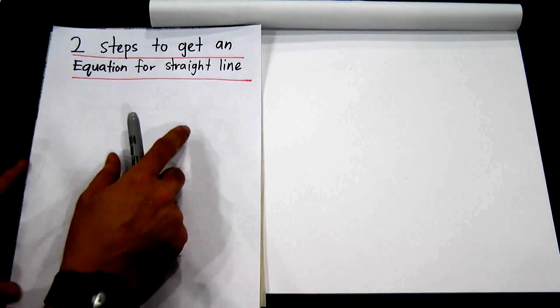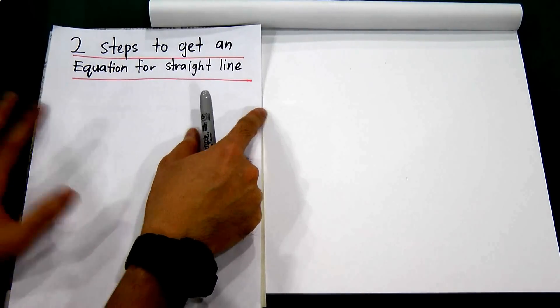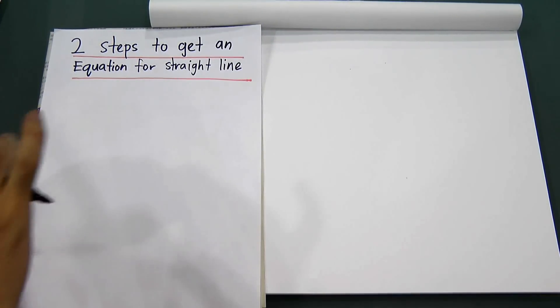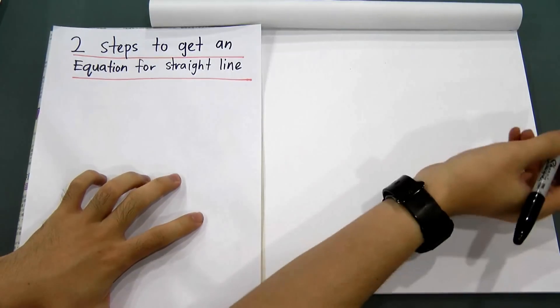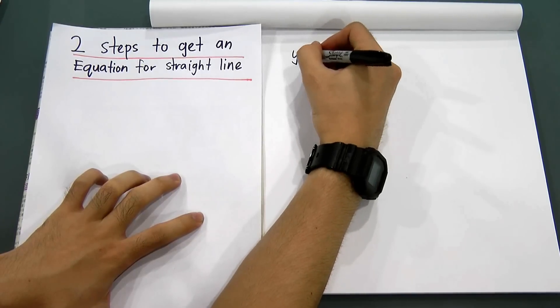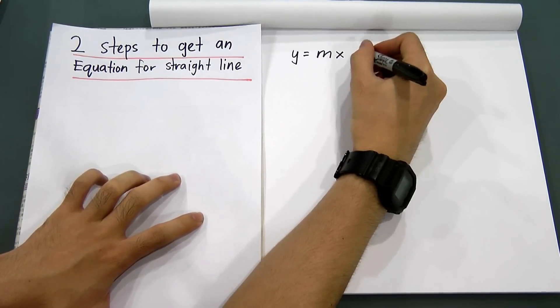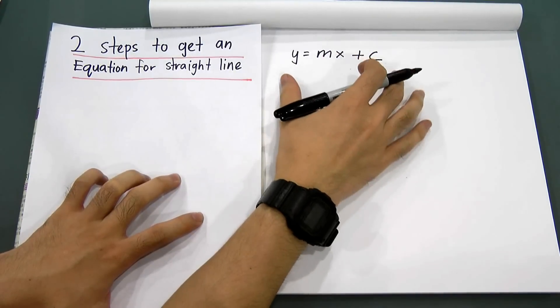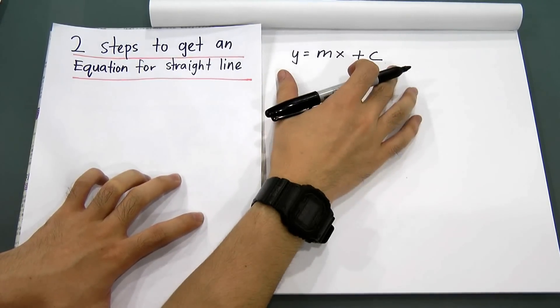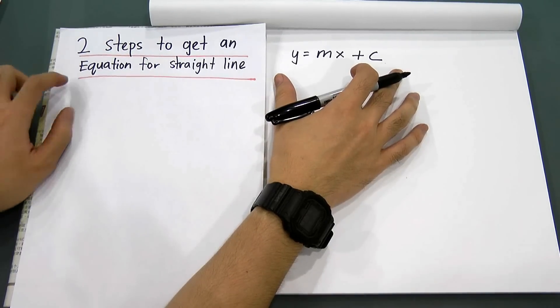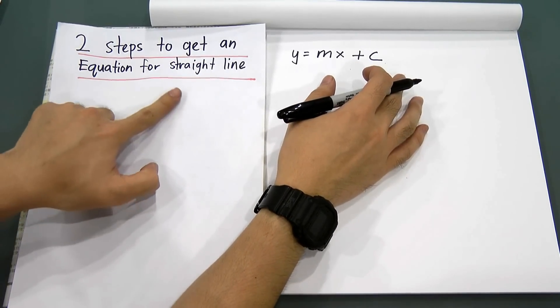Today I will explain the straight line chapter, which is Form 4, Chapter 5. A lot of students have issues with how to find a straight line. In mathematics, a straight line has an equation called y equal to mx plus c. Today I will teach you how to use two steps to get an equation for a straight line.